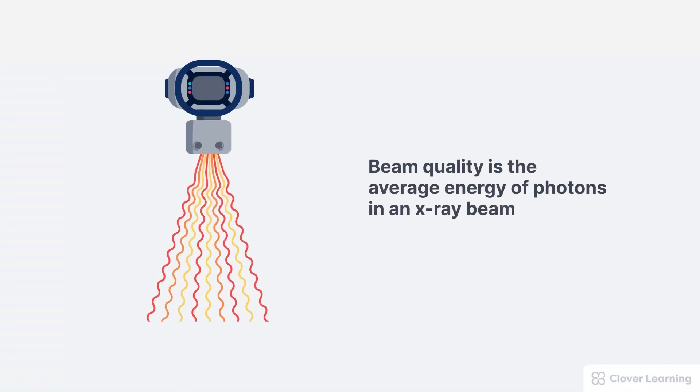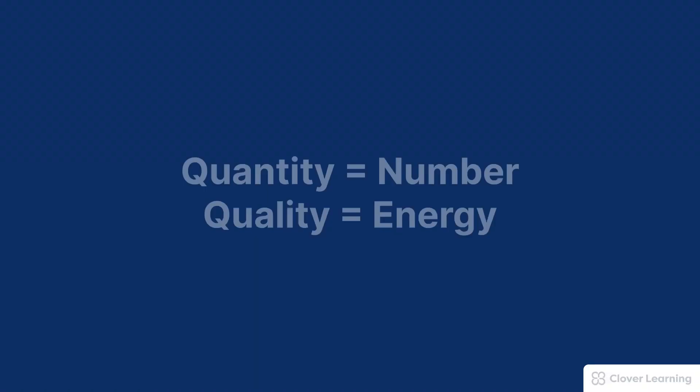Beam quality describes the average energy of the photons in an x-ray beam. It's important we don't confuse beam quality with beam quantity. Quantity refers to the number or amount of x-ray photons, but quality is different and refers to the energy of those photons.